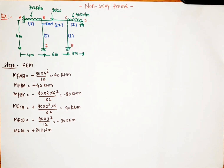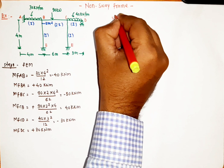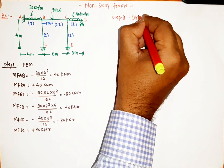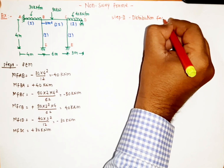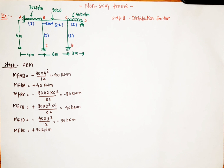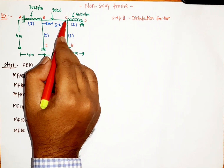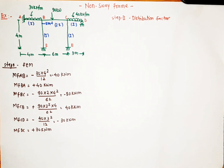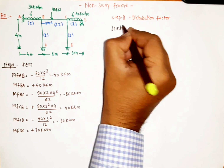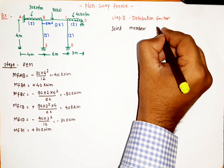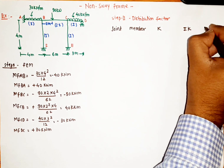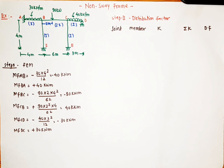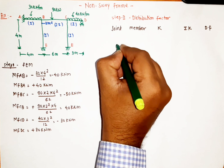Next we want to find the distribution factors, so step two is distribution factors. To calculate distribution factors we must know how many joints there are. There are two joints: joint B and joint C; the others are end supports. We make a table with columns for joint, member, stiffness k, summation of k, and distribution factor. The first joint is B.